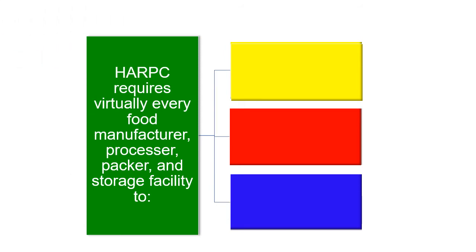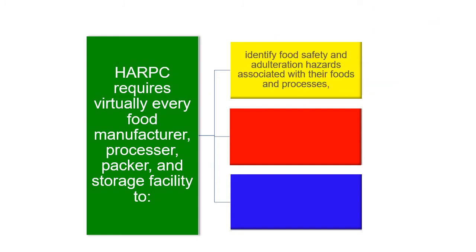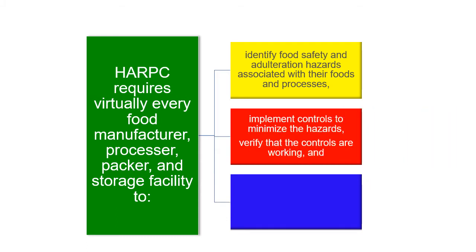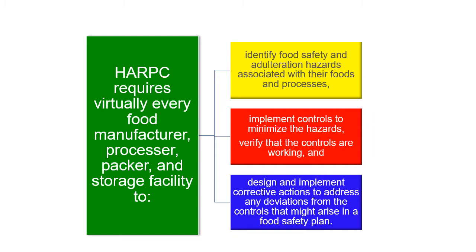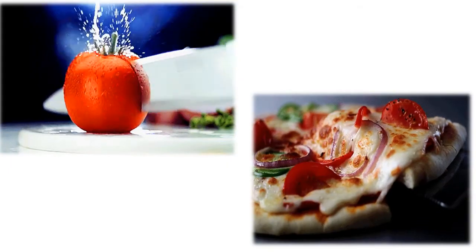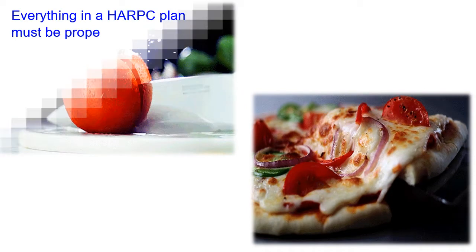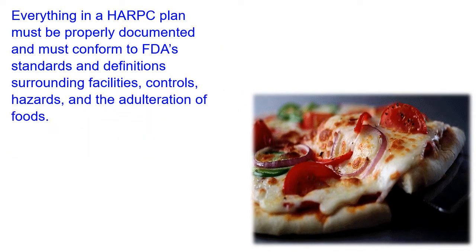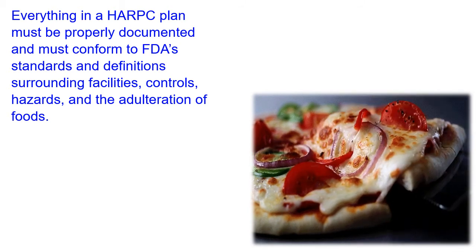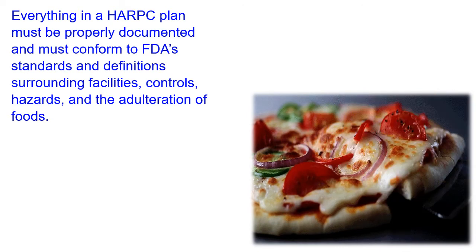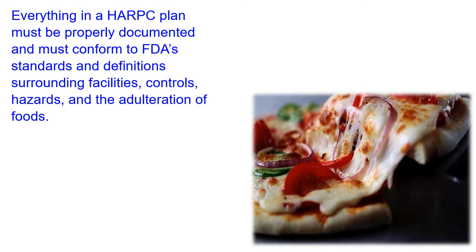HARPC requires virtually every food manufacturer, processor, packer, and storage facility to identify food safety and adulteration hazards associated with their foods and processes, implement controls to minimize the hazards, verify that the controls are working, and design and implement corrective actions to address any deviations from the controls that might arise in a food safety plan. Everything in a HARPC plan must be properly documented and must conform to FDA standards surrounding facilities, controls, hazards, and the adulteration of foods.